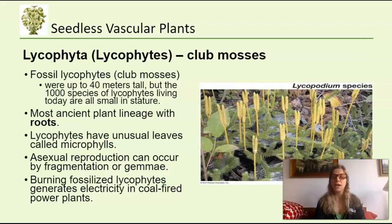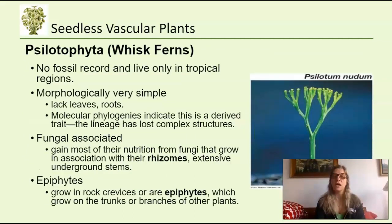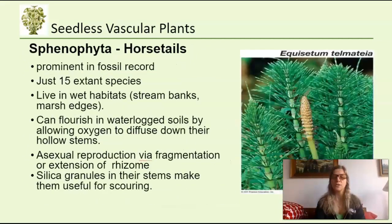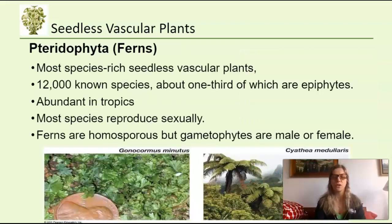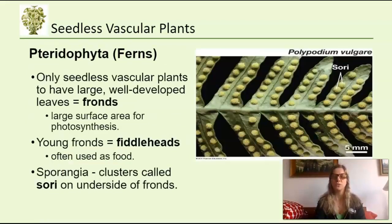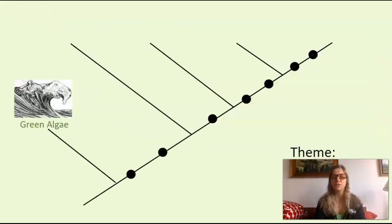Familiarize yourself with the groups that have vascular tissue: the Lycophyta, which are our club mosses; Psilophyta, which are whisk ferns; and horsetails, which you probably see a lot of in gardens. And then of course our ferns, which are the most species-rich group. You should be familiar with ferns and the characteristics that make them such an interesting and successful group.